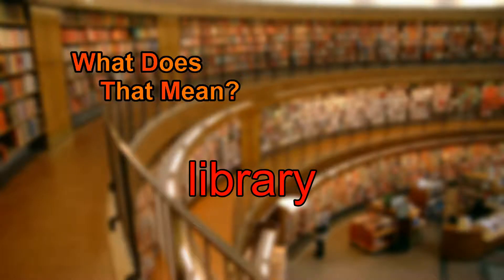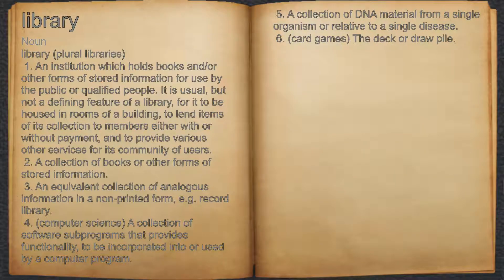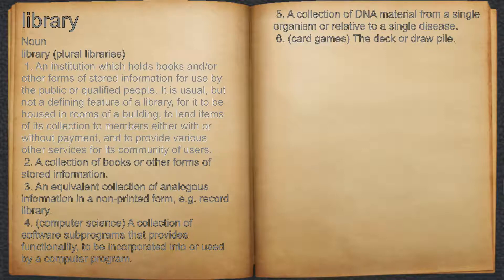What does library mean? Library. Noun. 1. An institution which holds books and/or other forms of stored information for use by the public or qualified people. It is usual, but not a defining feature of a library, for it to be housed in rooms of a building, to lend items of its collection to members either with or without payment, and to provide various other services for its community of users.